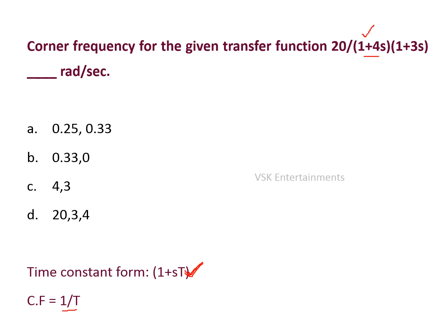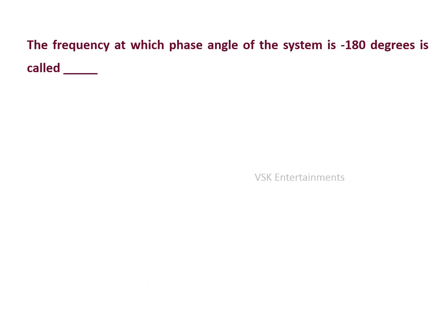The two factors (1 + 4s) and (1 + 3s) are already in time constant form. The first corner frequency is 1/4 and the second corner frequency is 1/3. Simplifying, we get 0.25 and 0.33 radians per second, so option A is the right answer.